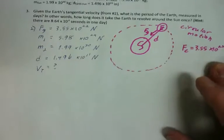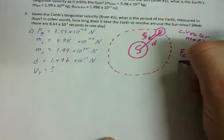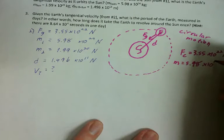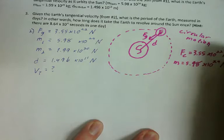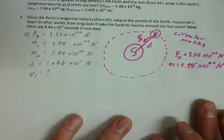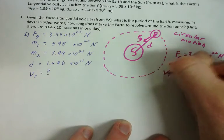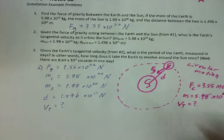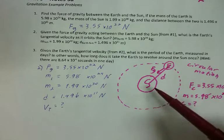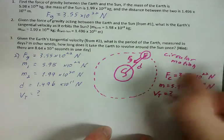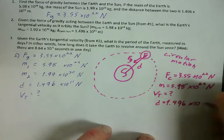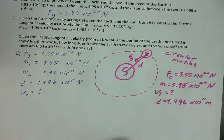So Fc is the force of gravity, which is 3.55 times 10 to the 22nd. The next part I need is the tangent to velocity, which is what I'm solving for. And the last thing I need is the radius. Well, I don't have a radius written down, but if I look at my drawing, I'll notice that the radius of the earth's circle is the distance between the earth and the moon. So I can just write down D equals 1.496 times 10 to the 11th meters. And there we go. I've got everything I need to set up the equation.